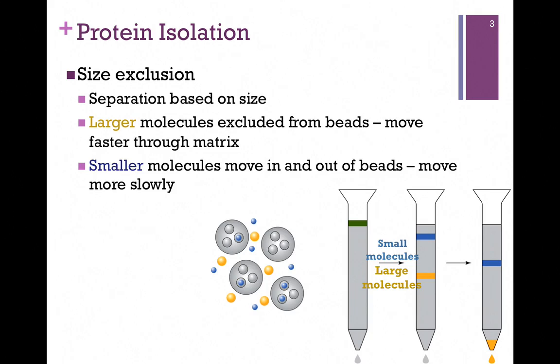We're going to look at size exclusion chromatography, where we're going to separate molecules based on size. In the example here, we have small molecules pictured as the blue spheres and large molecules as our yellow spheres. We start with a mixture of these two. This is the green band at the top of our column. We apply it to the column, and as the buffer flows through, these molecules will separate based on size.